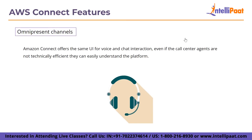The next feature is omnipresent channels. Amazon Connect offers the same user interface for voice and chat interaction. Even if the call center agents are not technically efficient, they can easily understand the platform. Having an omnipresent channel eliminates the need of building different workflows for chat and voice channels individually. Amazon Connect allows you to make rules and call flows and use them across the channels.